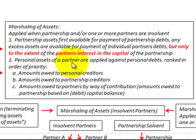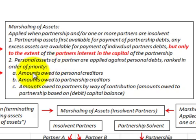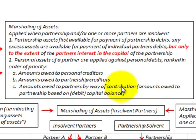Second, personal assets of the partner are applied against personal debts, ranked in order of priority. First, amounts owed to personal creditors. Second, amounts owed to partnership creditors. Third, amounts owed to the partners by way of their capital balances — so if they have a debit or deficient capital balance, they would be paying the partnership back.